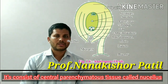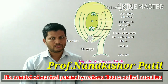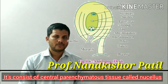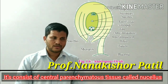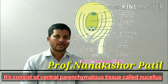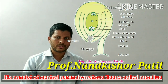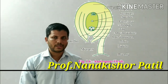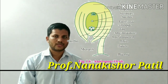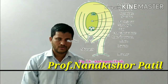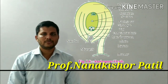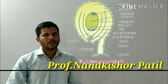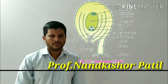It consists of the central parenchymatous tissue which is called as the nucellus. And this nucellus is protected by two layers of covering, which are called as the integuments. There are two layers — that is, an inner layer and an outer layer.